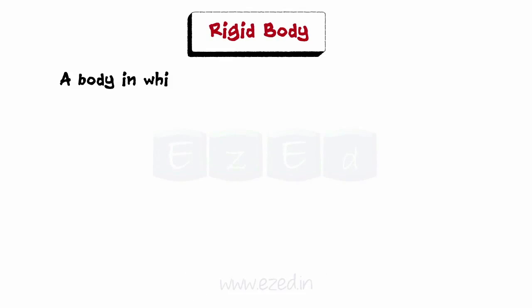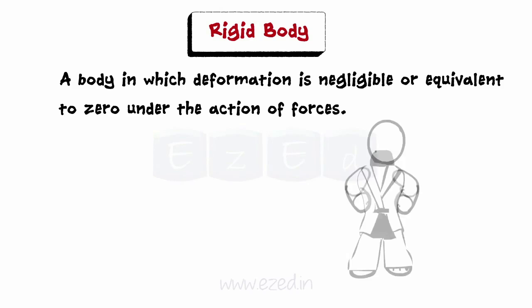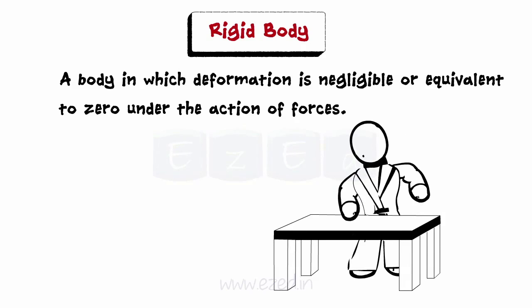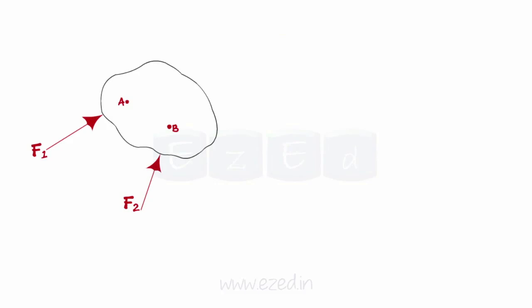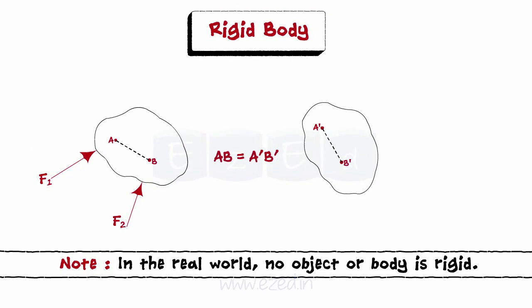Rigid body is defined as a body in which deformation is negligible or equivalent to zero under the action of applied forces. For example, if a small boy hits a table, the table does not break — in this case it is a rigid body. Points A and B are the original positions in a body. After application of two forces F1 and F2, the body takes a new position. A' and B' are the new positions of A and B. If the body is treated as rigid, the relative position of A'B' and AB are the same, that is AB equals A'B'. In the real world, no object is truly rigid, but many engineering problems can be solved by assuming rigid bodies.